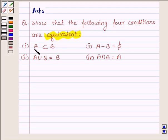First is A is a subset of B, second is A minus B is equal to an empty set, third is A union B is equal to B, and fourth is A intersection B is equal to A.